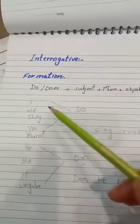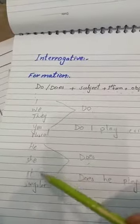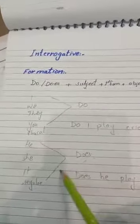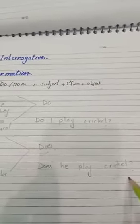So with I, we, they, you, plural - 'do' starts. And he, she, it, singular - 'does' starts. Do I play cricket? Then question mark. Does he play cricket? Then question mark.